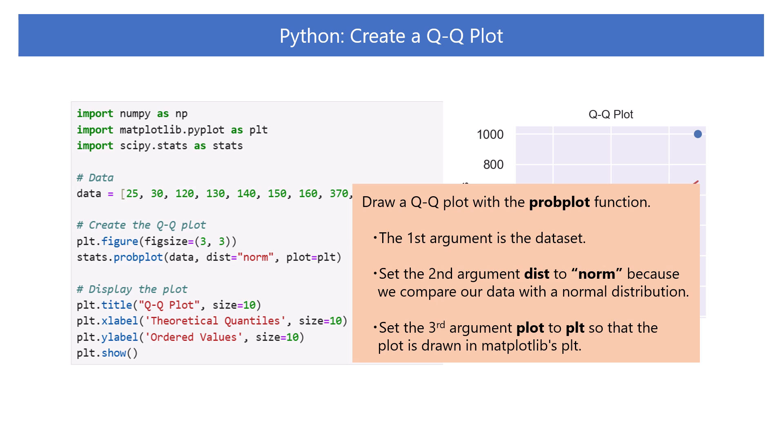After setting the figure size, draw a Q-Q plot with the probplot function. The first argument is the dataset. The second argument, dist, means distribution. Since here we compare our data with a normal distribution, we should set this to norm.